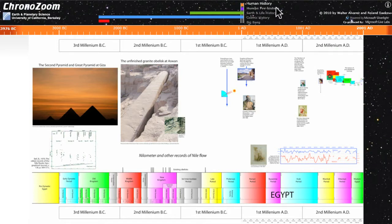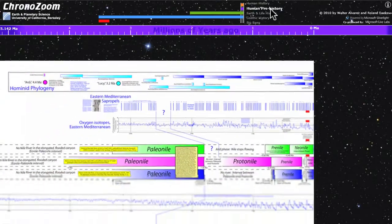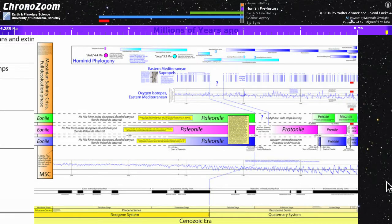Now what you can do is go up to these locator bars at the top and you can click on human prehistory. And now it's going to zoom out and you can see written history disappeared into less than a pixel in the upper right hand corner.